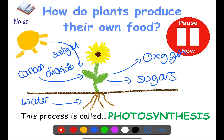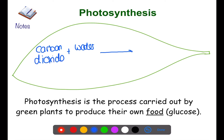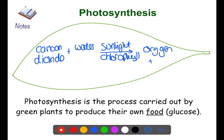Pause the video now and sketch out this diagram. During photosynthesis, we take in carbon dioxide and water and turn these into glucose and oxygen — we can represent this using a word equation. This happens in the leaves of plants, which take in carbon dioxide from the air and water through their roots. They use chlorophyll, a type of pigment found in the leaves, together with sunlight, to produce oxygen and glucose.